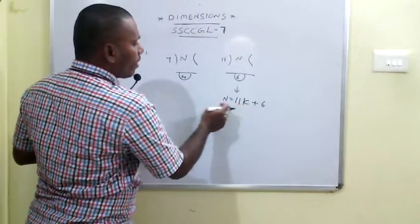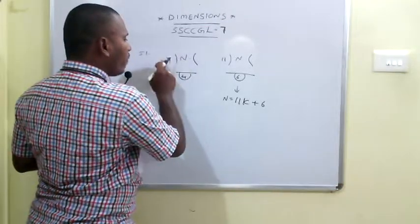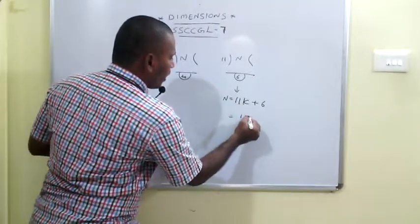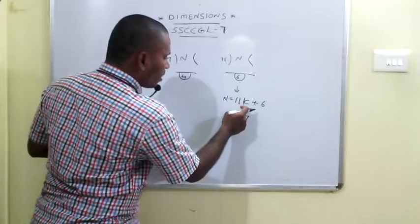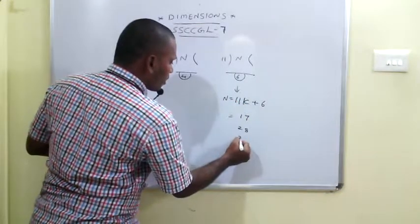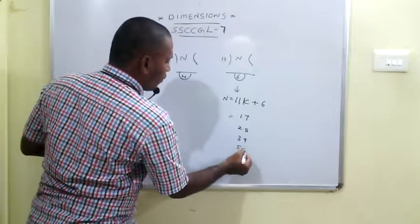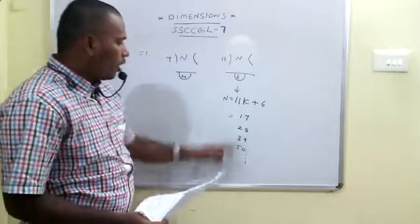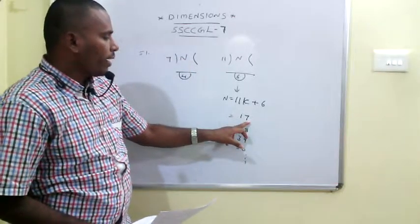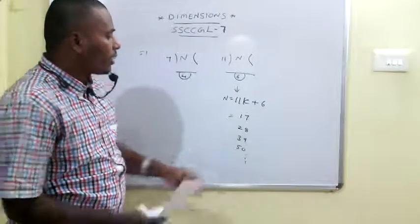For different values of k, we get different values of n. Among these, we need the value where dividing by 7 leaves remainder 4. If k=1, n=17. If k=2, n=28. If k=3, n=39. If k=4, n=50. Dividing 17 by 7 gives remainder 3; 28 by 7 gives remainder 0; 39 by 7 gives remainder 4. So our value of n is 39.